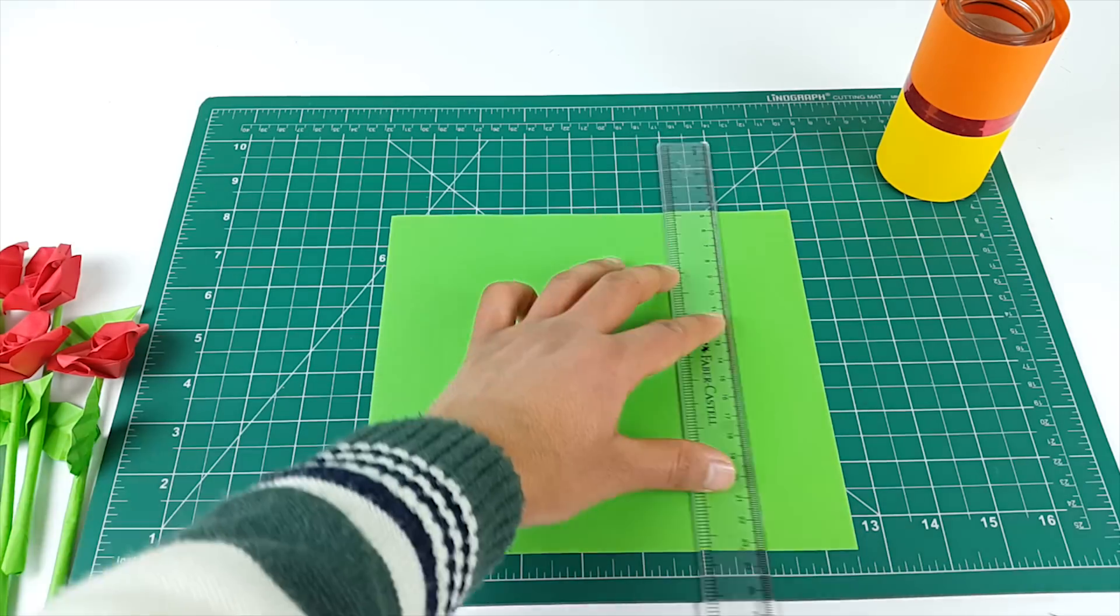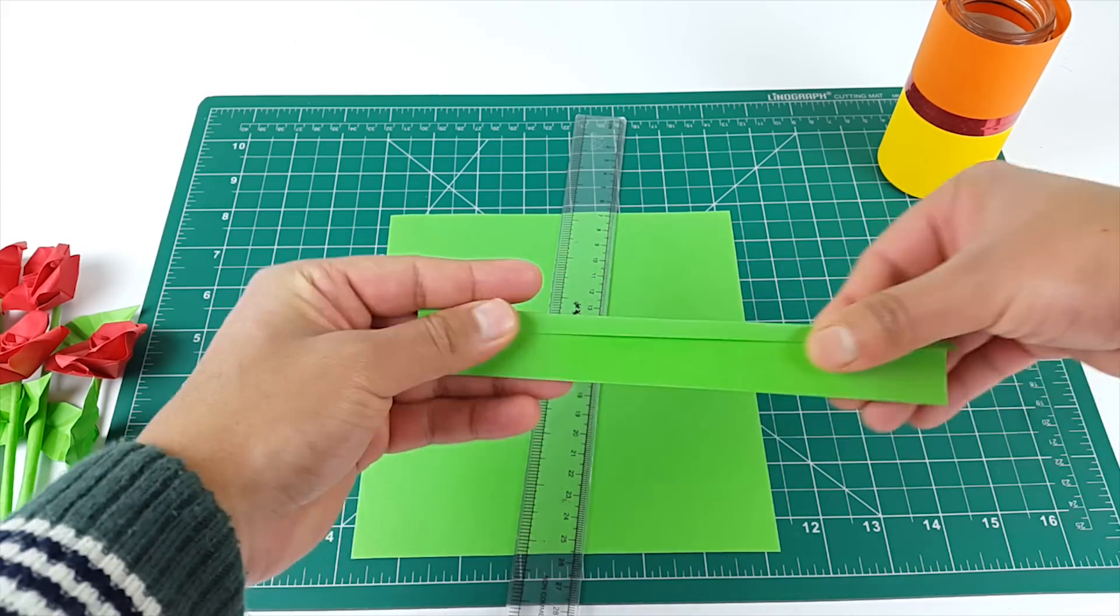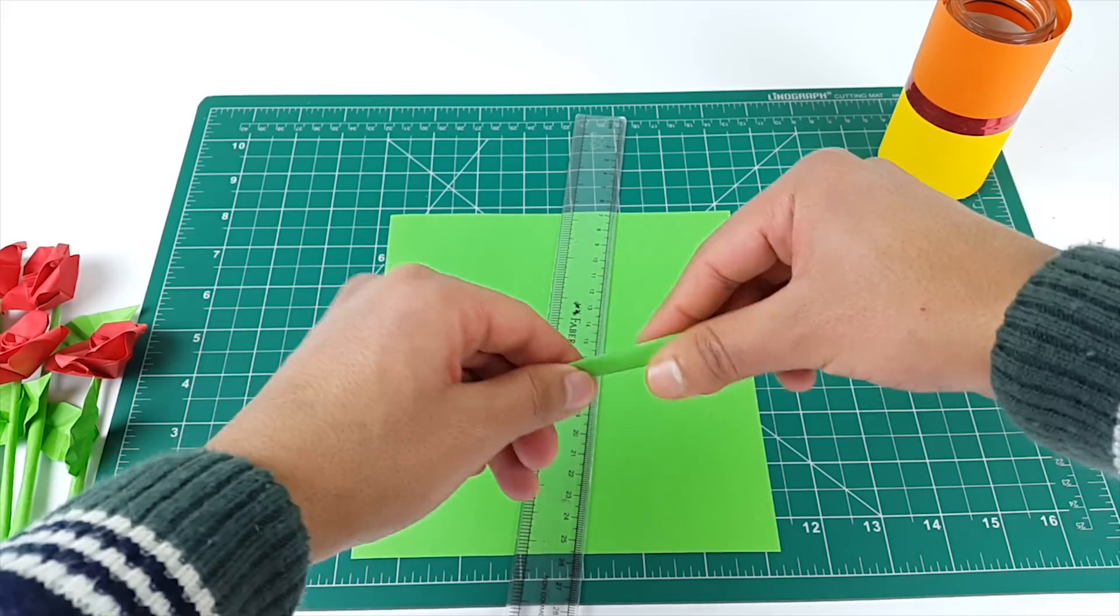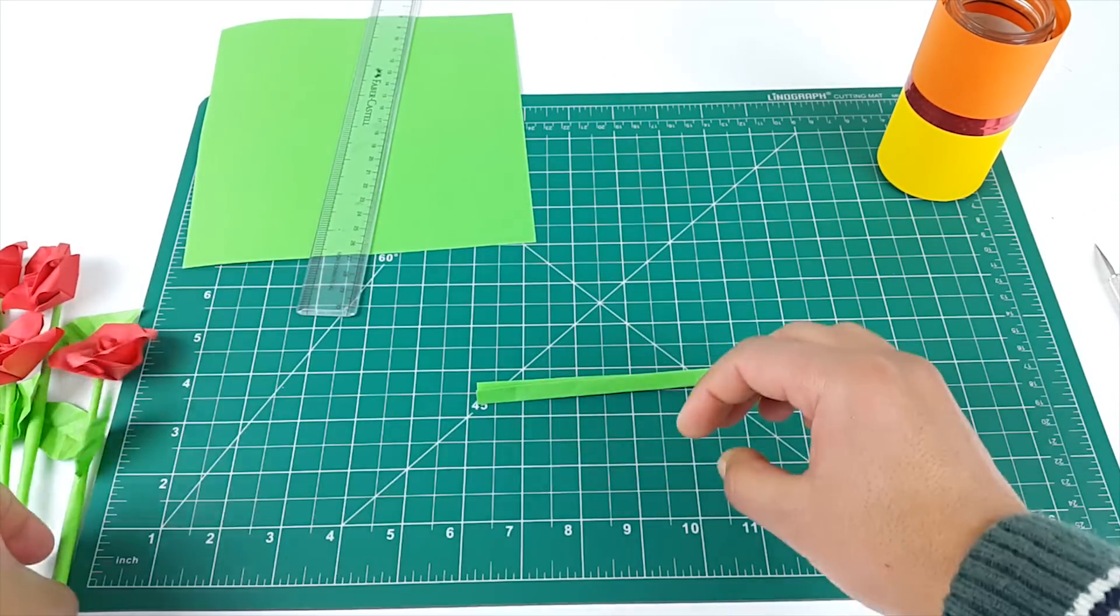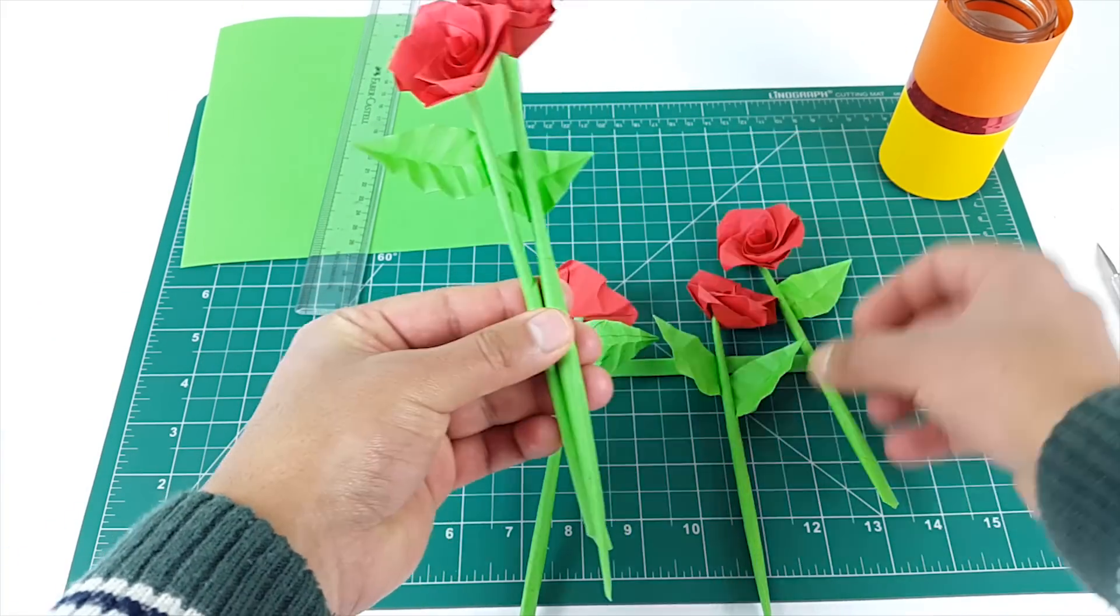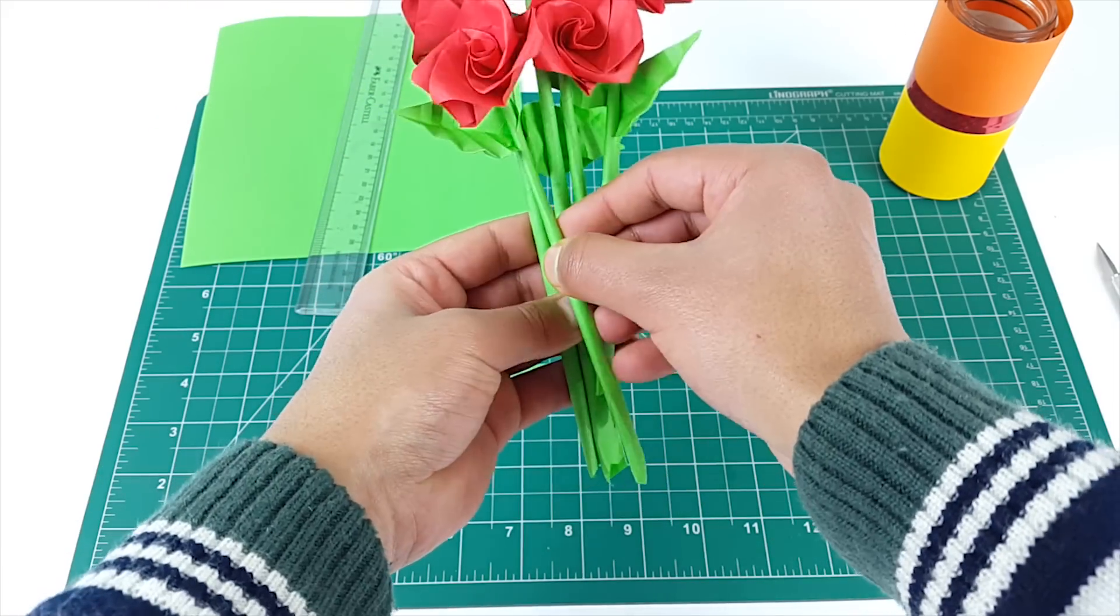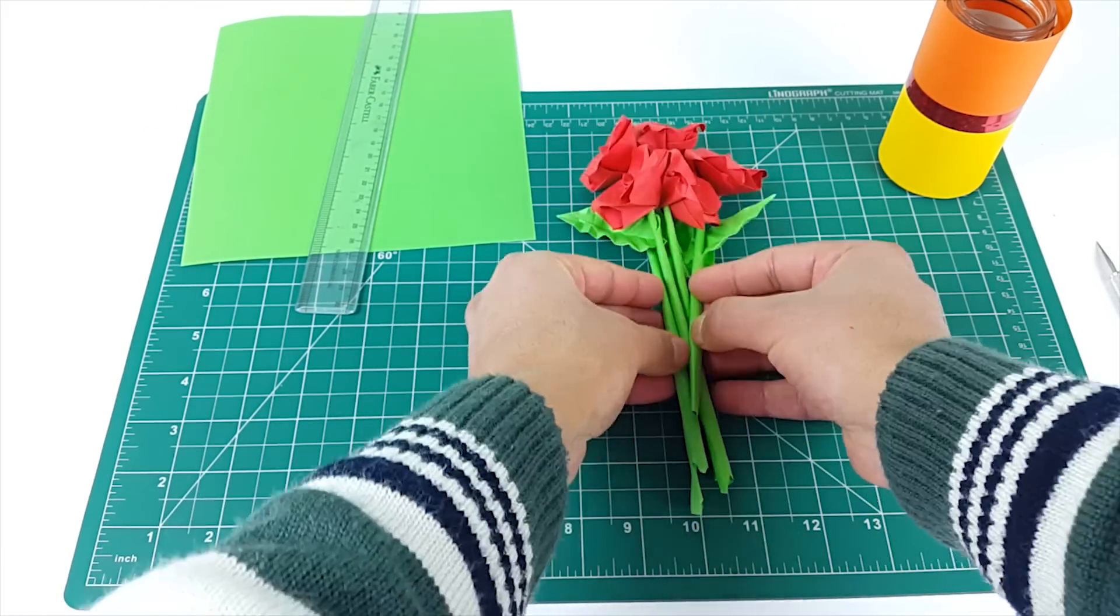There is also one variation you can try. For that, cut a small paper strip and fold it like this. Now wrap this strip around the stems and tie a knot.